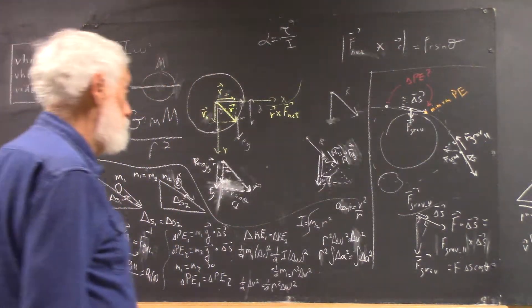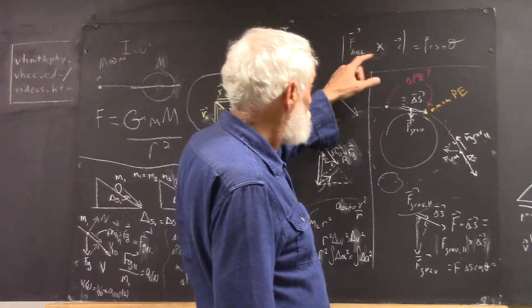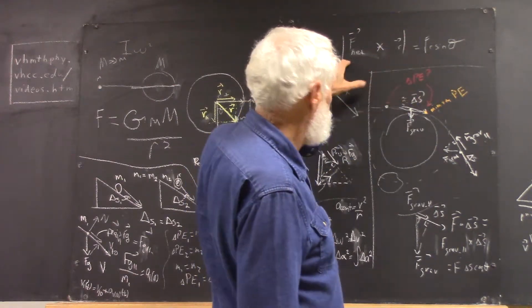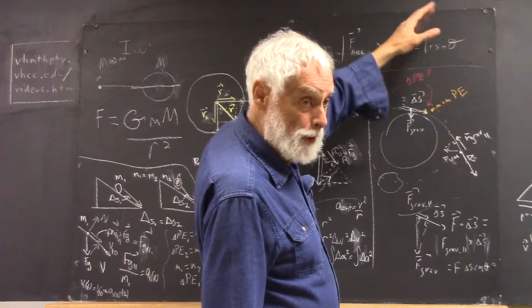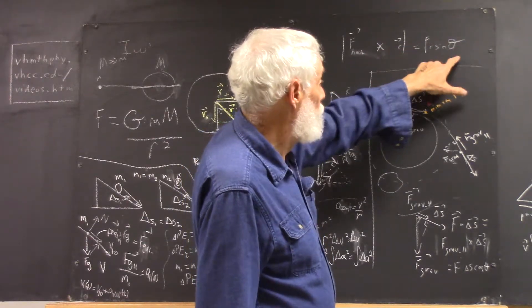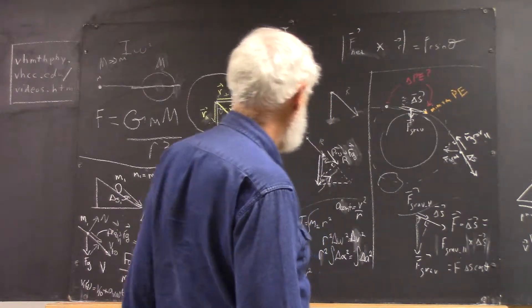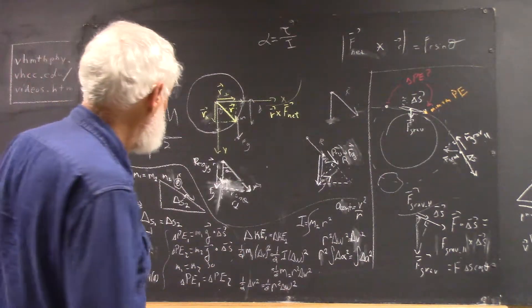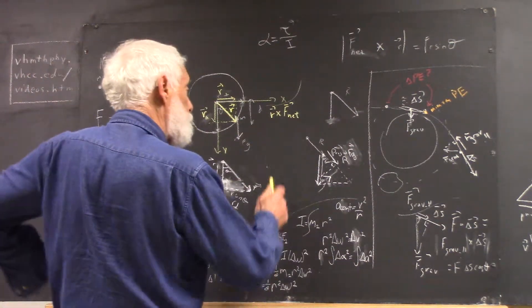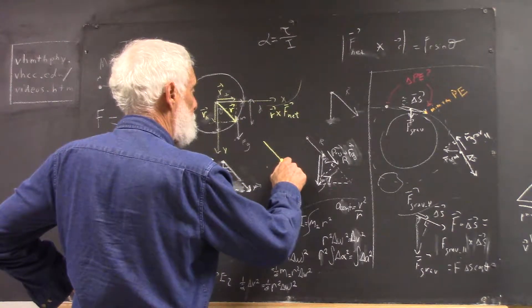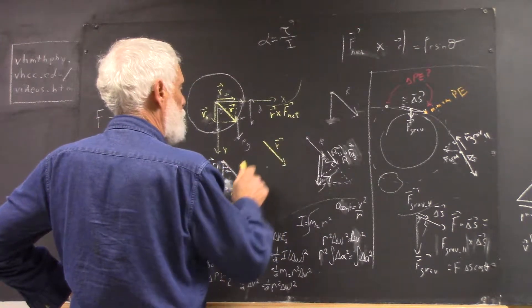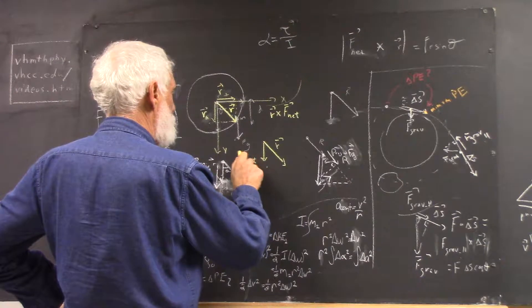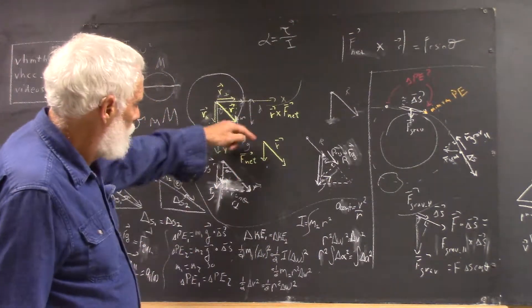Now we know that the magnitude of a cross product of two vectors is the product of the magnitudes. So if f stands for the magnitude of f-net and r, without the arrow, stands for the magnitude of r, and theta is the angle between them, well, there is the magnitude. We want to understand that, though, in terms of a vector diagram. So what we want to do is we want to put r and f-net in a diagram with the same initial point.